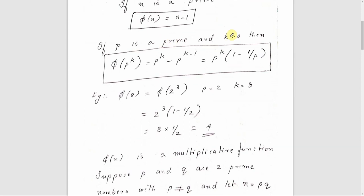Second case: if p is a prime and k is greater than 0, we must use the equation phi of p raised to k equals p raised to k into 1 minus 1 by p. For example, phi of 8: since 8 equals 2 raised to 3, we apply the formula: 8 into 1 minus 1 by 2, which gives 8 into 1/2, equal to 4.